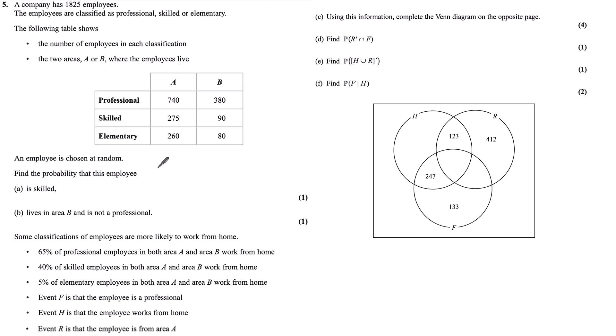An employee is chosen at random. Find the probability that this employee is skilled. So I'm looking at this row here. The probability that a random employee is skilled is the sum of these two values divided by the total number of employees, which is 1,825. So it's 275 plus 90 over 1,825, which actually simplifies quite nicely to one fifth.